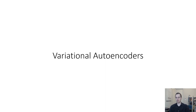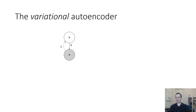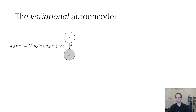Now let's put things together and go through the full variational autoencoder. The variational autoencoder is a latent variable model that has latent variables z with a Gaussian prior and observed variables x, which might be an image. It has an encoder which performs inference: q_phi of z given x, a neural network that takes in x and produces a mean and a variance over z.